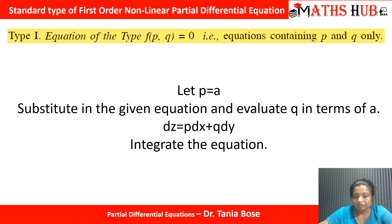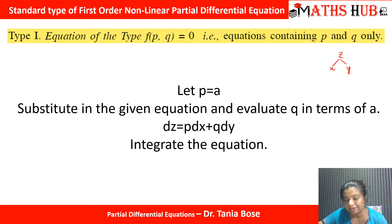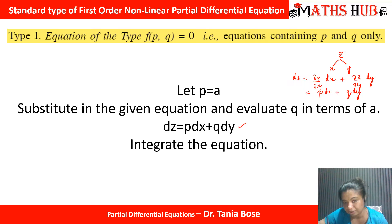The method for Type 1: we substitute P equal to A in the given equation and try to evaluate Q in terms of A. Once Q is evaluated in terms of A, we know that Z is dependent on X and Y. We can write the total derivative of Z as dZ = (∂Z/∂X)dX + (∂Z/∂Y)dY, that is dZ = P dx + Q dy. We substitute the values of P and Q, integrate the equation, and that gives the value of Z.